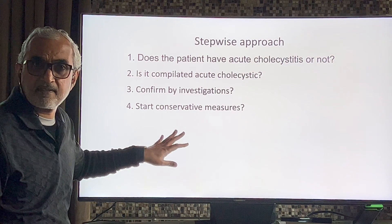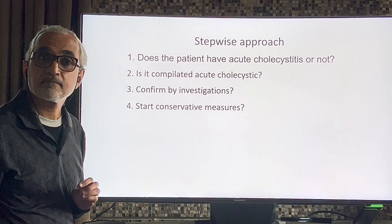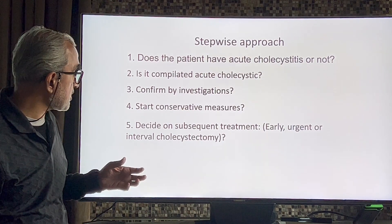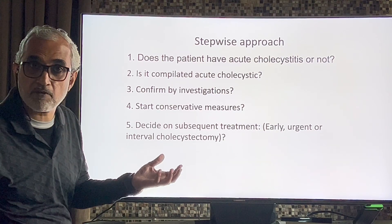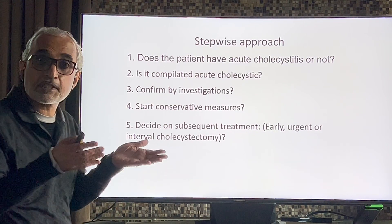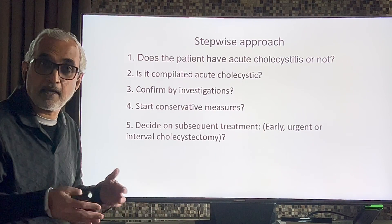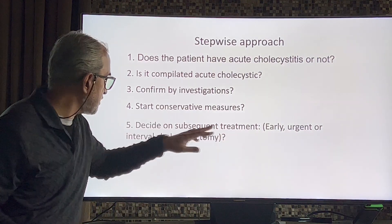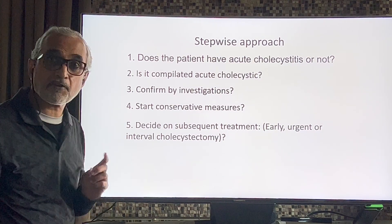The next step is to start conservative measures. Once conservative measures have started, a very important question arises: what is the subsequent treatment? Are we going to continue with conservative treatment and do cholecystectomy later, or do cholecystectomy now — and if now, when exactly? This gives rise to the concept of early, urgent, and interval cholecystectomy.